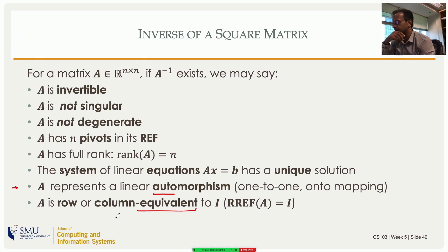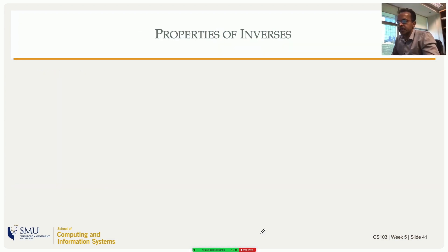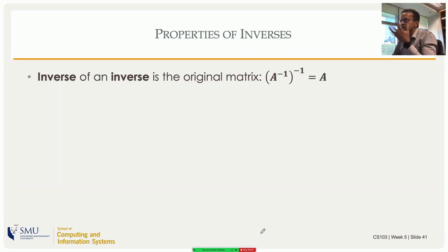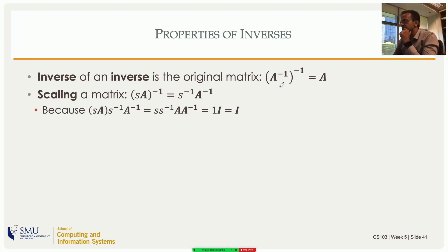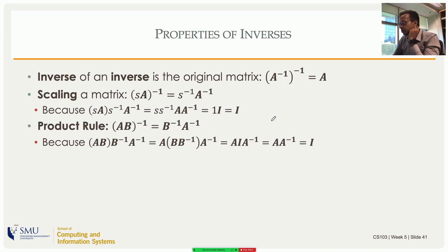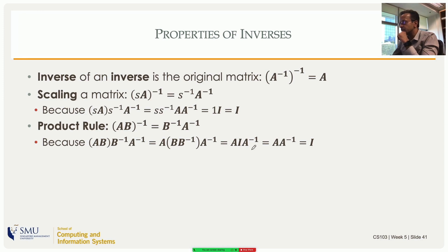A square matrix is row or column equivalent to the identity matrix if you apply Gauss-Jordan on a non-singular matrix, you get the identity. Some properties of inverses: the inverse of an inverse is the original matrix. Scaling a matrix means its inverse is scaled by the reciprocal of the scaling factor. For a product, the inverse of a product is the product of the inverses taken in reverse order.